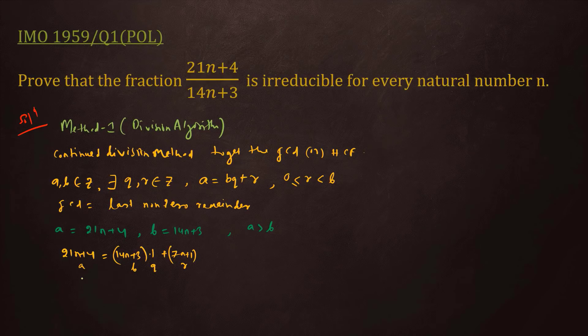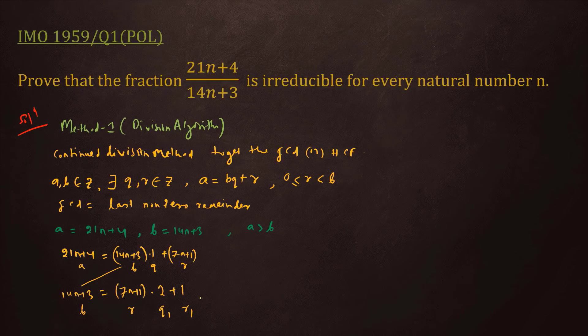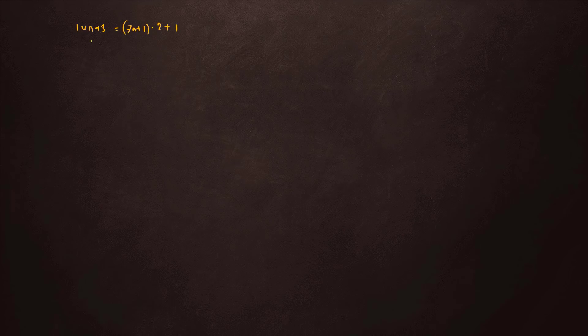Again we will do the continued division. This b comes here: 14n plus 3 equals (7n plus 1) times 2 plus 1, where 7n+1 is the new divisor. So b is 14n+3, the new b is 7n+1 (q1 = 2), and r1 is 1.